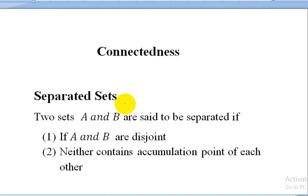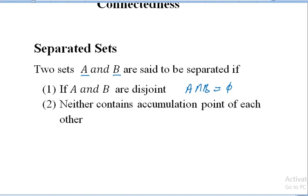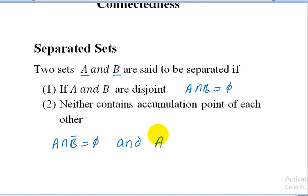The first concept is separated sets. Two sets A and B are said to be separated if A and B are disjoint and neither contains an accumulation point of each other. Disjoint means A intersection B equals phi, and neither contains accumulation points means A intersection B-closure equals phi and A-closure intersection B equals phi. If two sets satisfy these two conditions, then A and B are said to be separated.